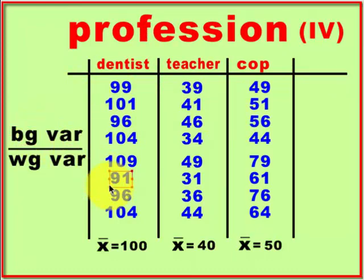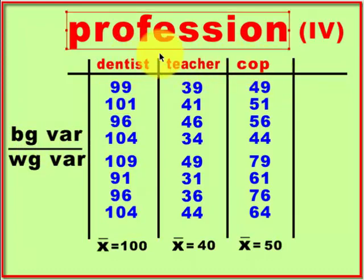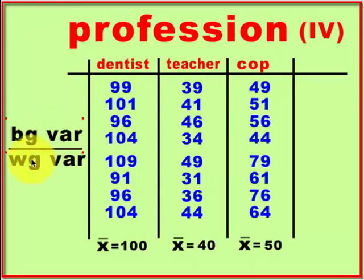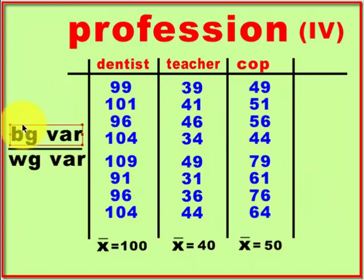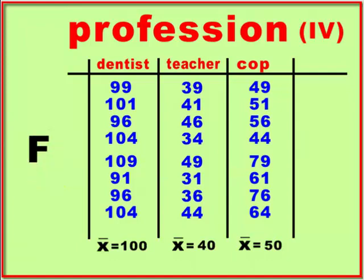The reason the variance is so different between dentists, teachers, and cops is because they all make different amounts of money — that's good variance. Within-group variance is bad variance, the natural occurring variance in each set of data that you cannot explain. When you divide the explainable variance by the unexplainable variance, you get what we call your F ratio.